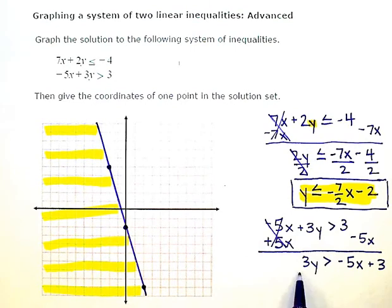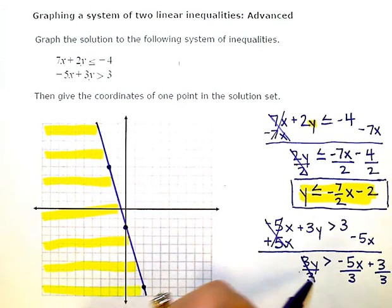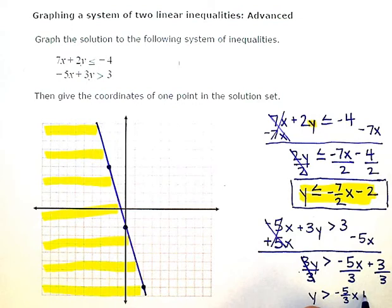Next I need to divide out this coefficient. So I'm going to divide everything by 3. After simplifying, and again, I divided by a positive number, so I don't have to flip my sign. I'm just going to simplify. So I'll be left with y is greater than negative 5 thirds x plus 1. 3 divided by 3 is a plus 1 on the end.